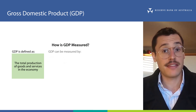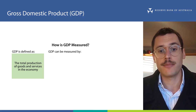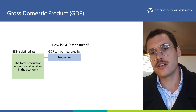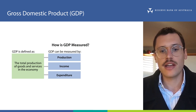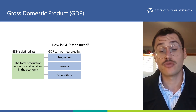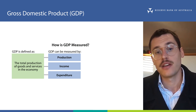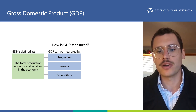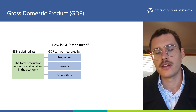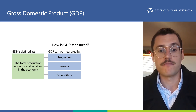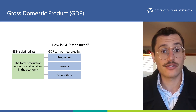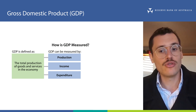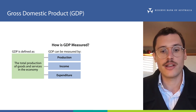There are three different methods used to measure GDP: the production, income, and expenditure methods. In Australia, the Australian Bureau of Statistics, or ABS, is responsible for measuring GDP. They do this four times a year, or once a quarter. The ABS collects data from many sources, in particular via surveys of households and businesses, and then uses all of this data to come up with GDP.